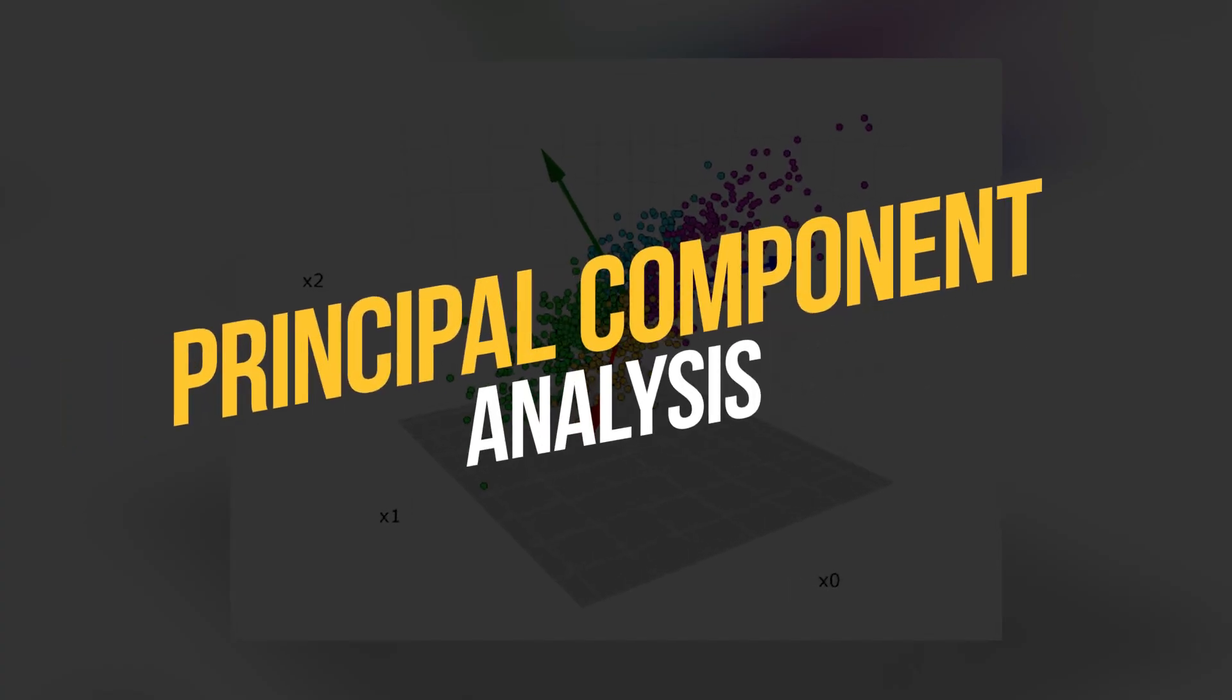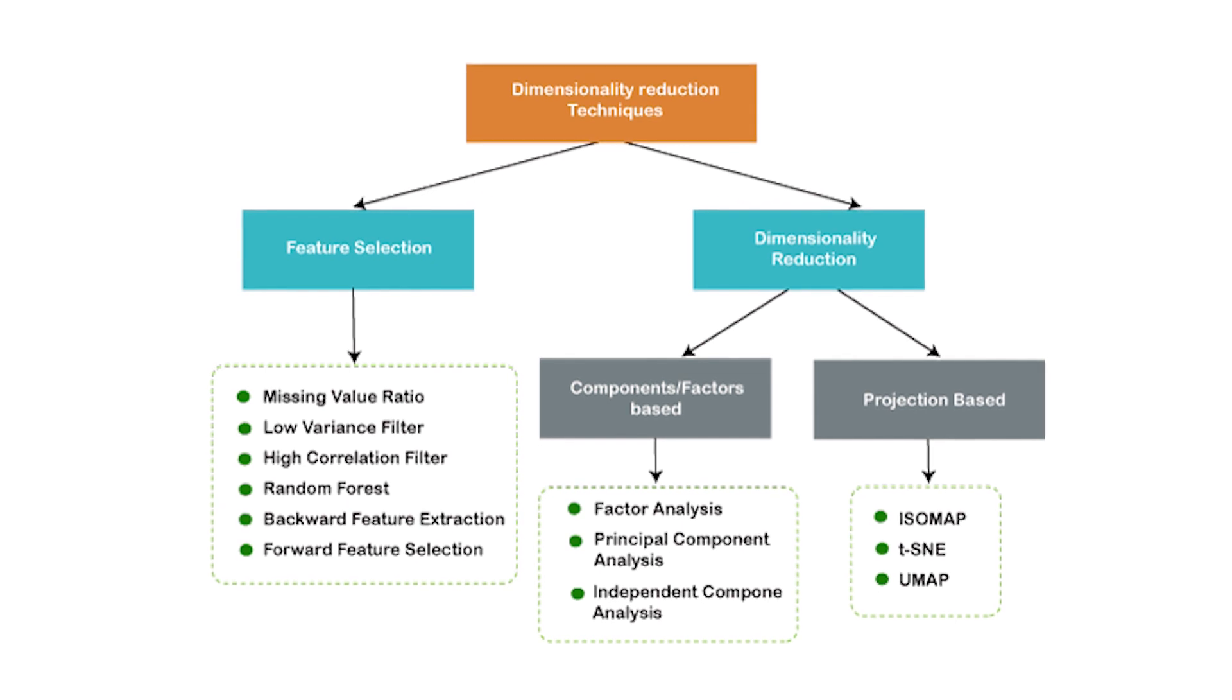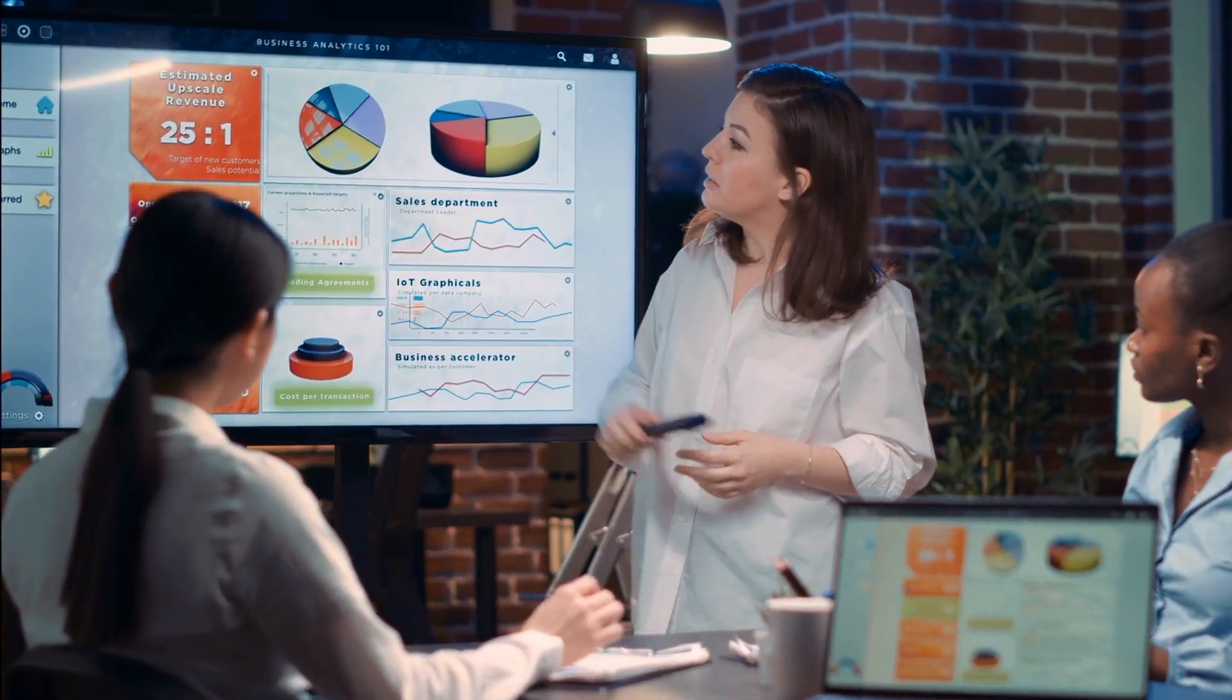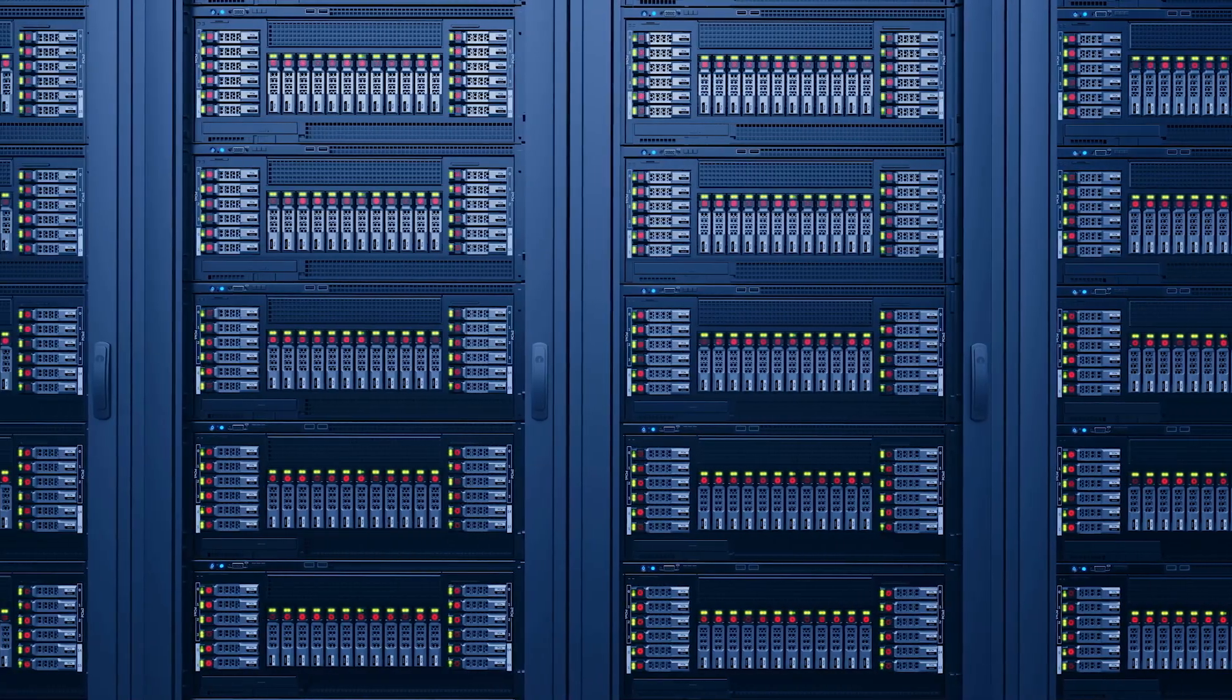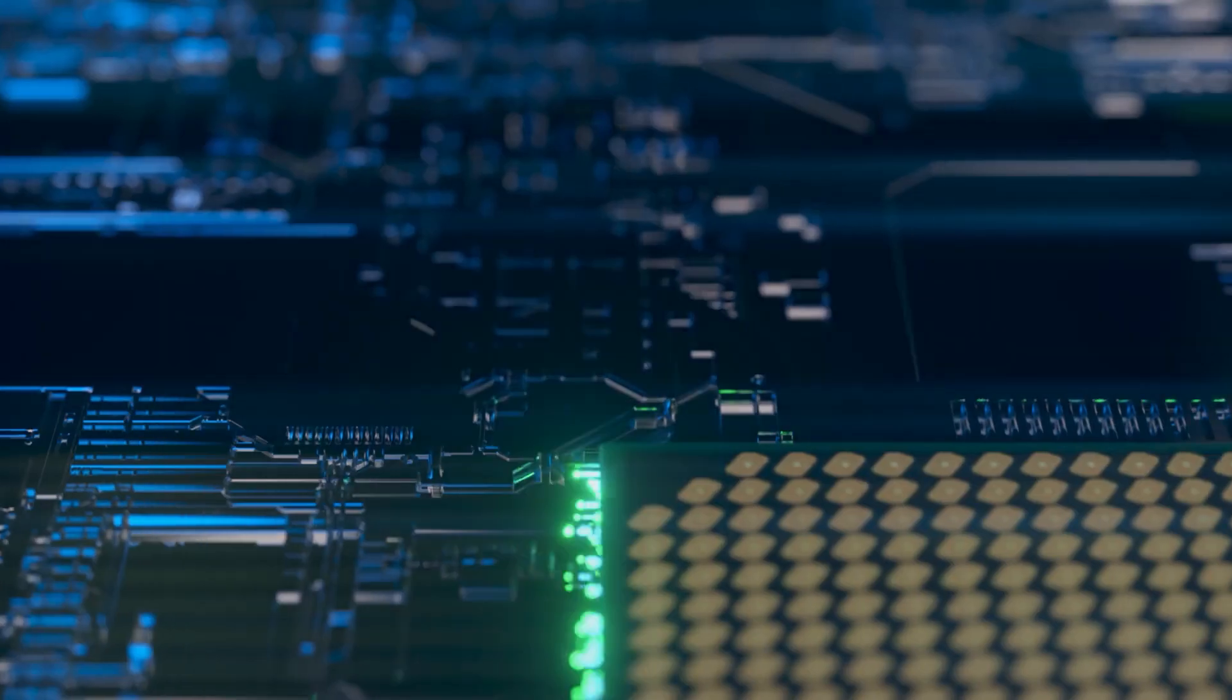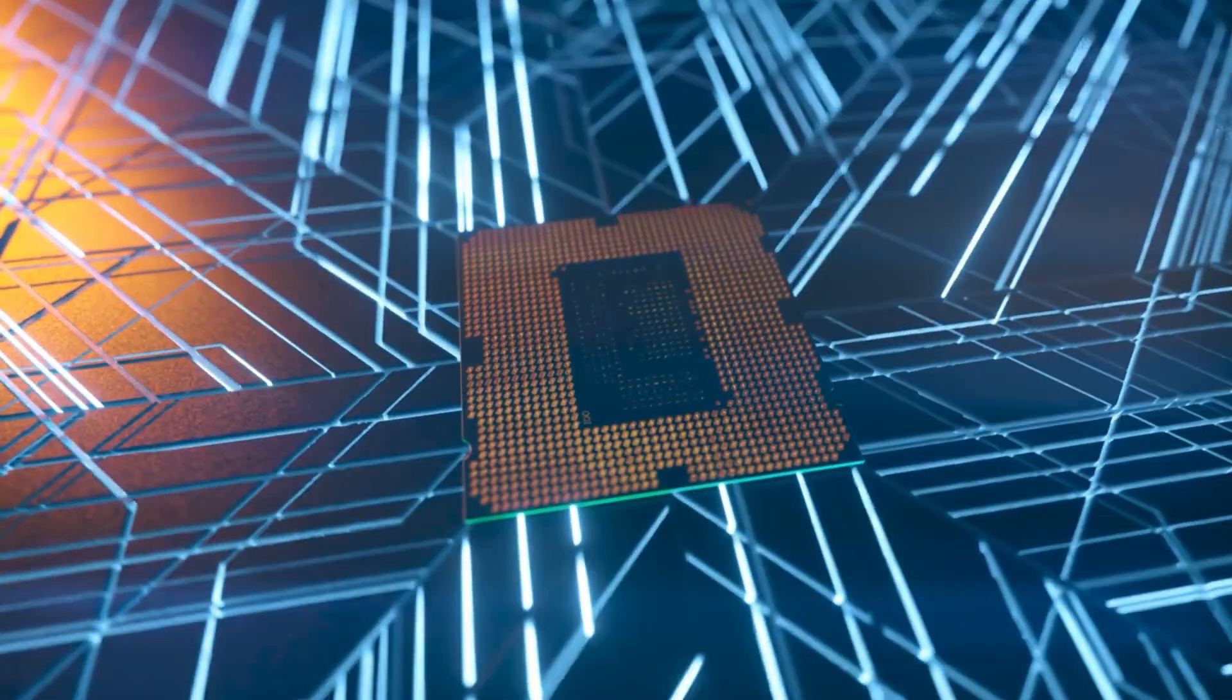Principal component analysis is a dimensionality reduction technique used to transform high-dimensional data into a lower-dimensional space while preserving the most important information. It identifies the directions along which the data varies the most. By projecting the data onto these components, principal component analysis helps visualize and understand complex datasets.